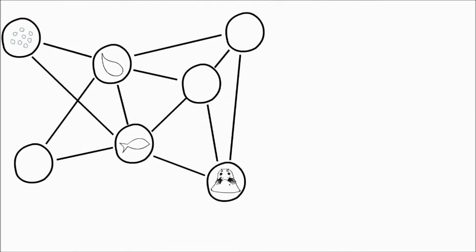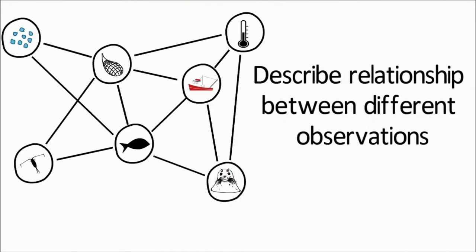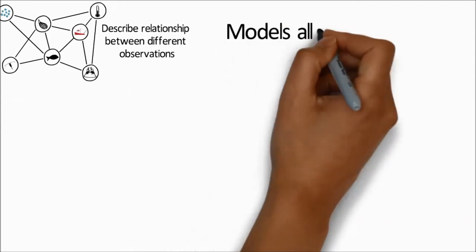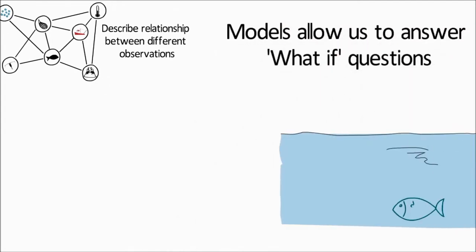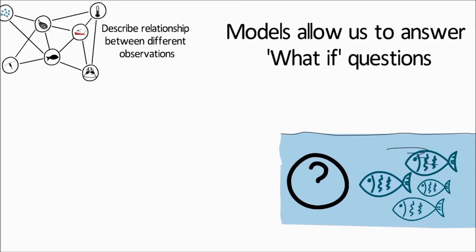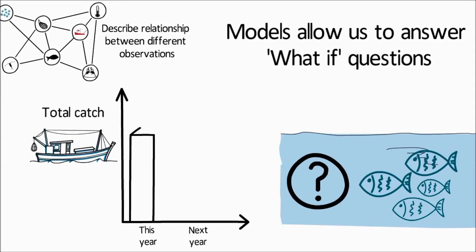Fisheries models are used to help describe the relationship between different observations and allow us to answer what if questions such as what will happen to the future numbers of mature spawning fish in the sea if catches go up or down by a certain amount.